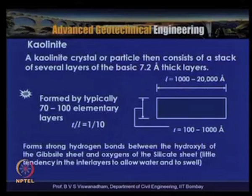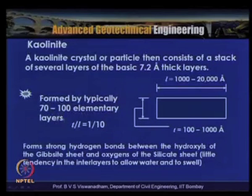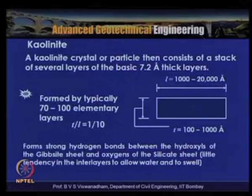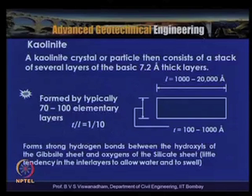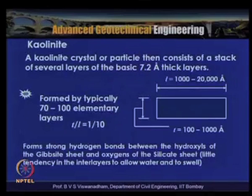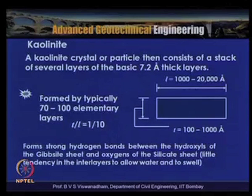The kaolinite particle is formed by typically 7 to 100 elementary layers; the thickness-to-length ratio is about 1:10. A kaolinite crystal consists of a stack of several 7.2 Å thick layers with strong hydrogen bonds between the hydroxyls of the gibbsite sheet and oxygens of the silicate sheet, giving little tendency for interlayer water or swelling.